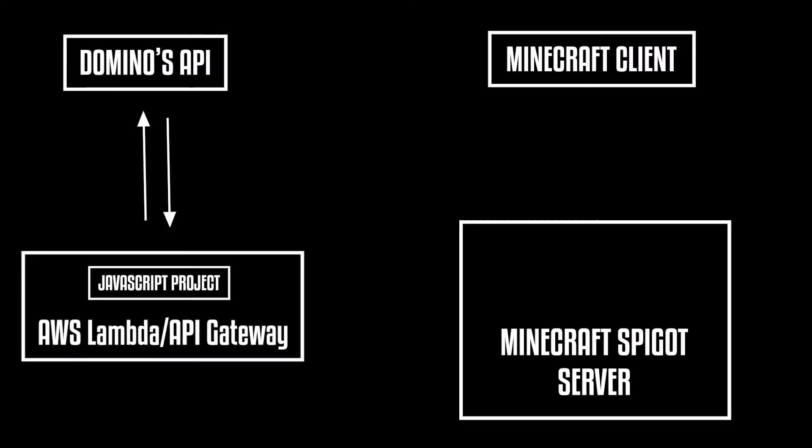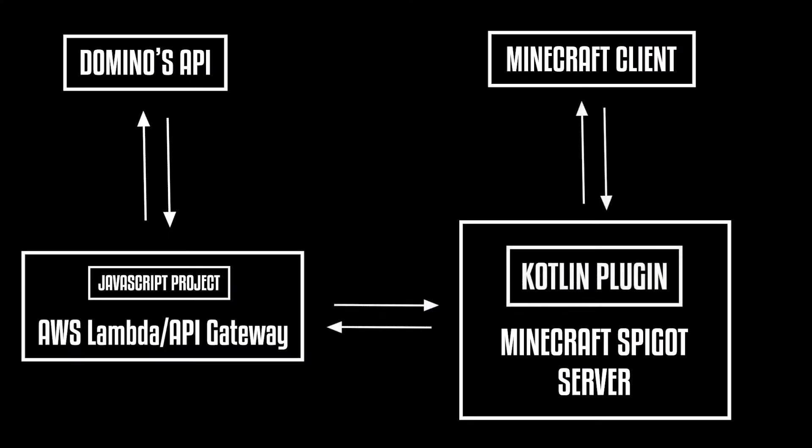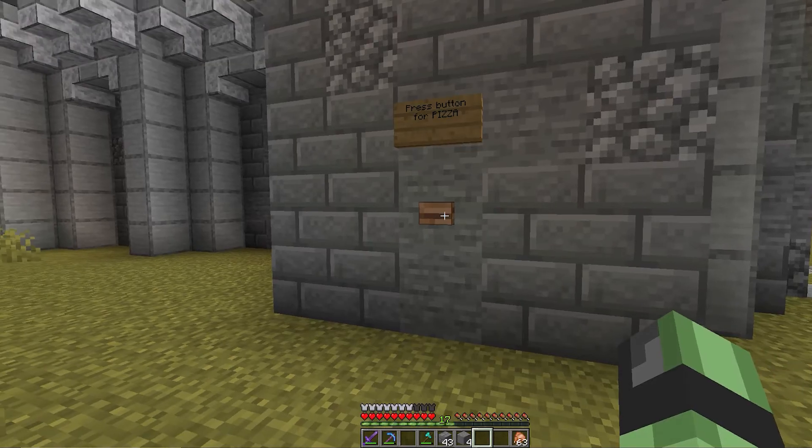Once we write our Kotlin code we can add this as a plugin to our Spigot Minecraft server. Once we do that, the last thing we need to do is hit a button in Minecraft, and if everything works it should order us some pizza. So let's hop on the computer and start writing this code.